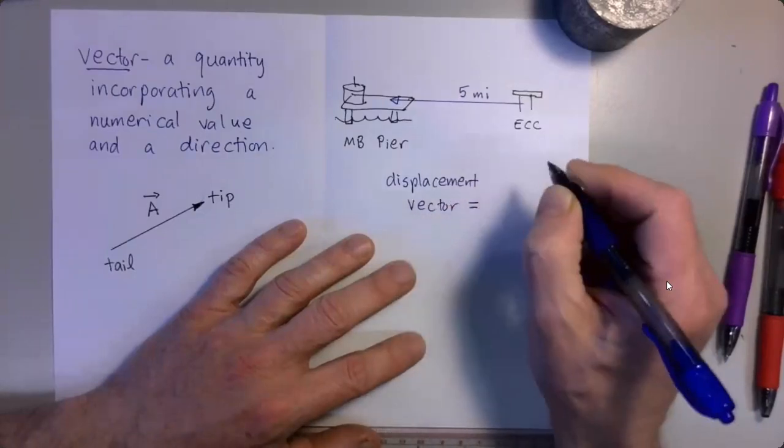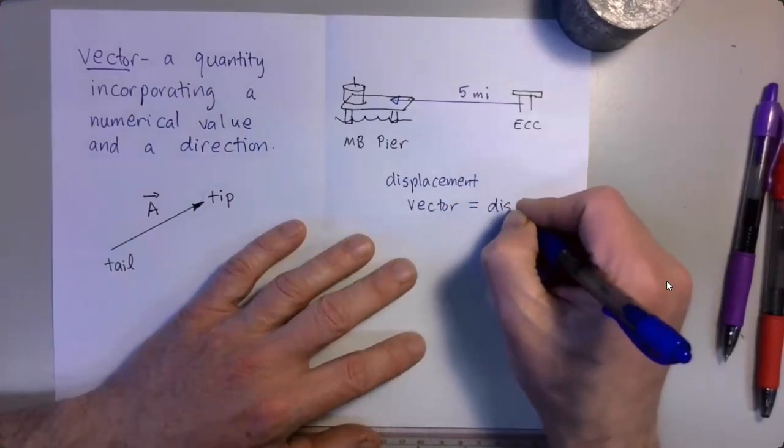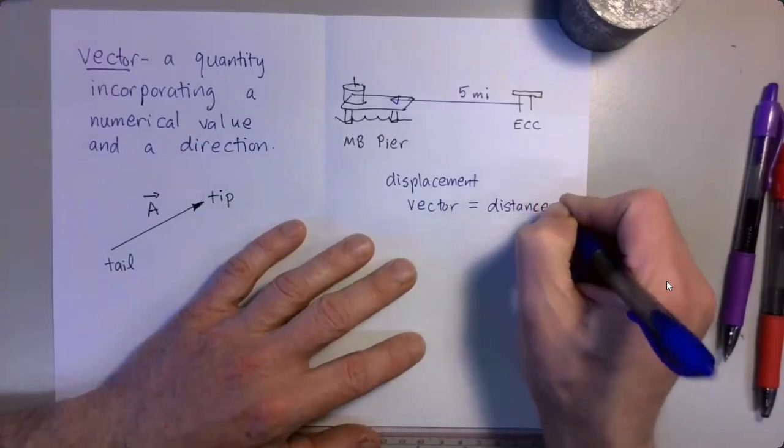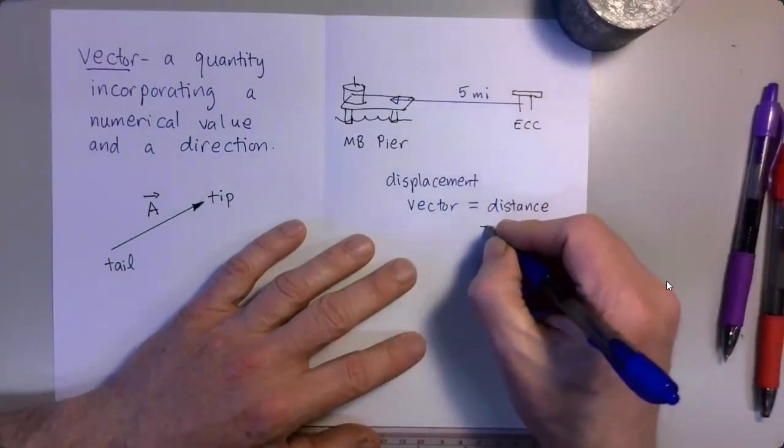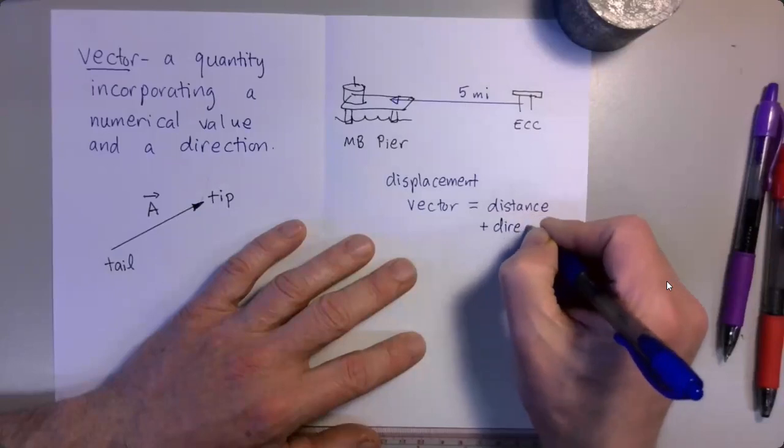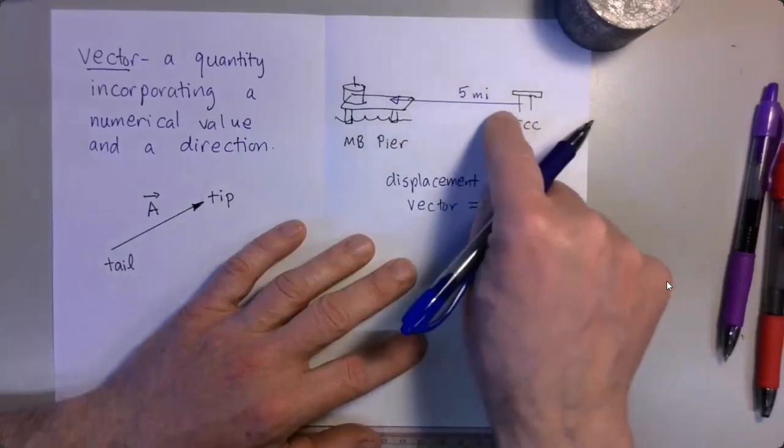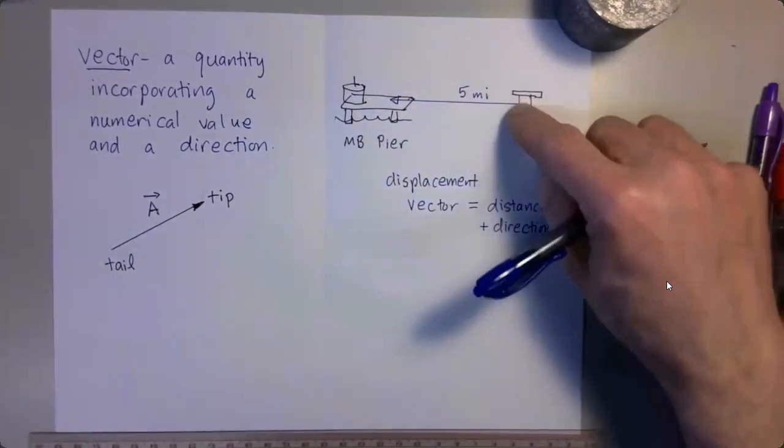A displacement vector is a distance, such as five miles, plus a direction, such as driving to the west. Okay, so that's a displacement vector.